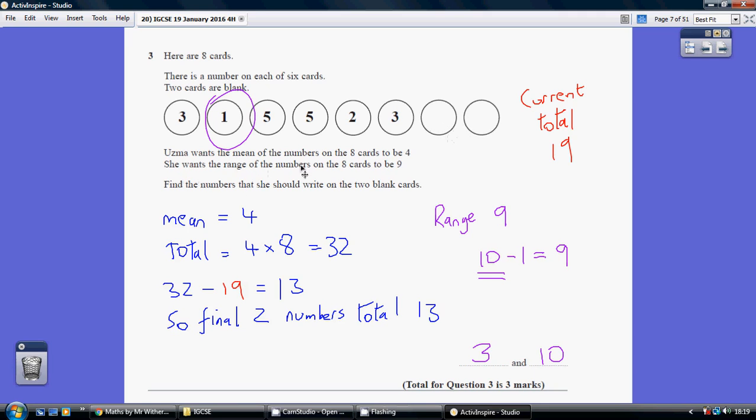Now secondly, we're told that we want the range of the 8 cards to be 9. Now the range is biggest take away smallest. Now this is clearly going to be the smallest number. So the biggest number has got to be 9 more than that. So the biggest number is going to be 10.